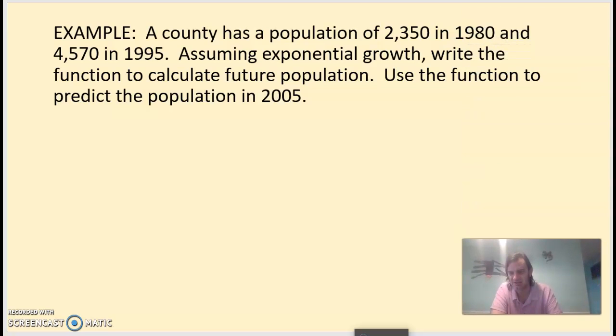All right, here's an example. A county has a population of 2,350 in 1980 and 4,570 in 1995. Assuming exponential growth, write the function to calculate future population and then use the function to predict the population in 2005. So we're doing population here, so I'm going to write that formula out here. P(t) equals P sub 0 times little a raised to the t. Now, they don't give us everything that goes in the formula, but they give us enough to answer the question.